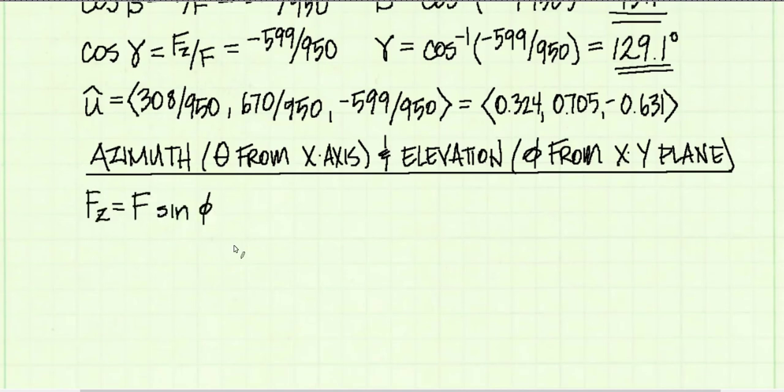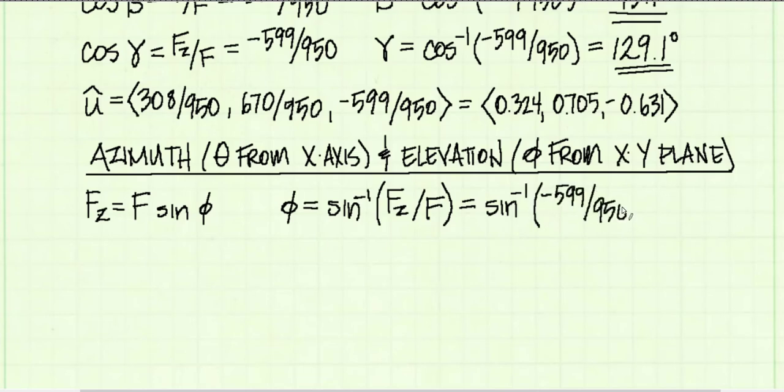Here's one of our relationships. I know the force component in the z-direction, and I know my magnitude F. I can rewrite it to solve for phi. Solving for phi, I get negative 39.1 degrees.